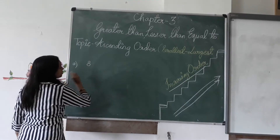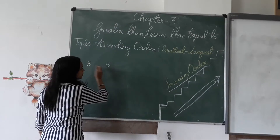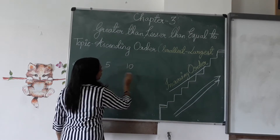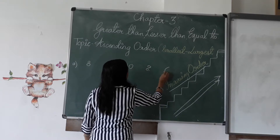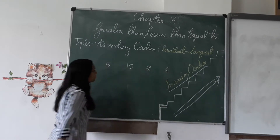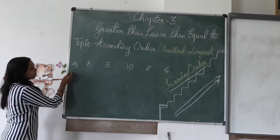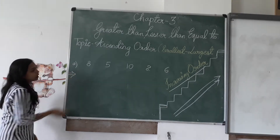The numbers are: eight, five, ten, two, six. These are the numbers that I have written.